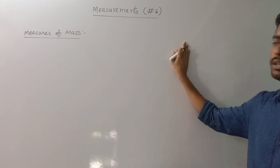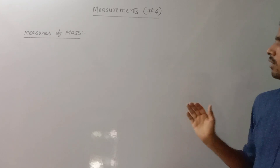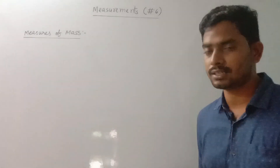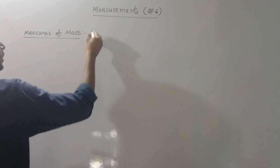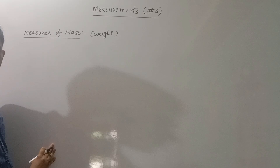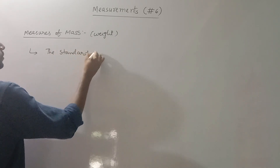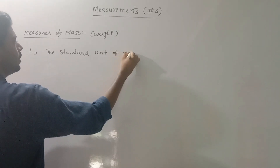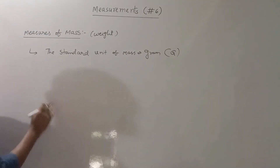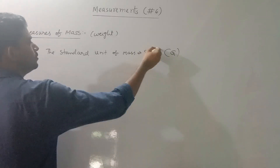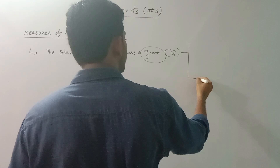We will go one by one. In this session, we will discuss the measurement of length and the measurement of weight. The standard unit of weight or mass is equal to gram. The standard unit of mass is gram. For gram, we have several measurements of size.